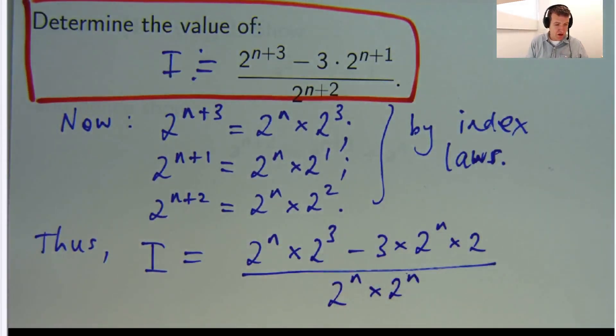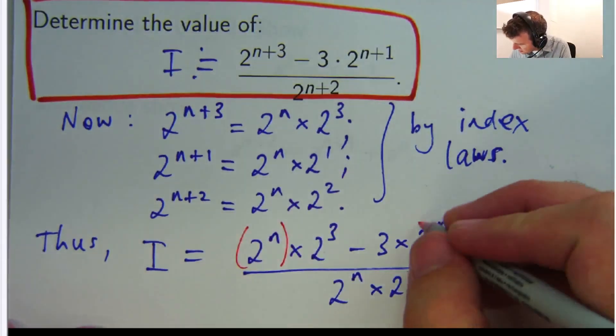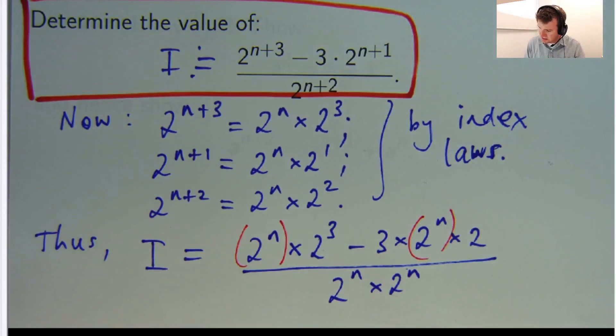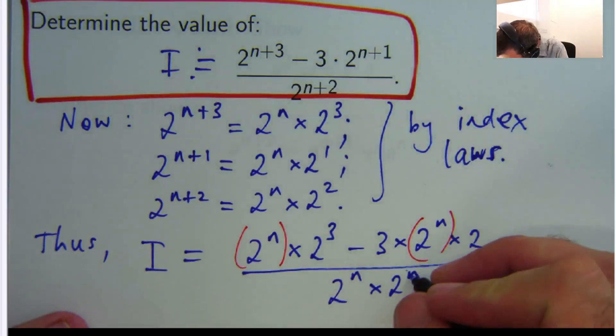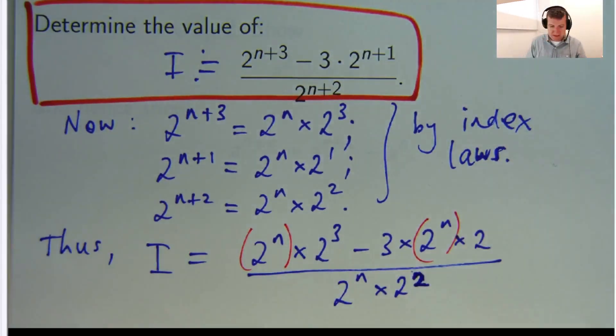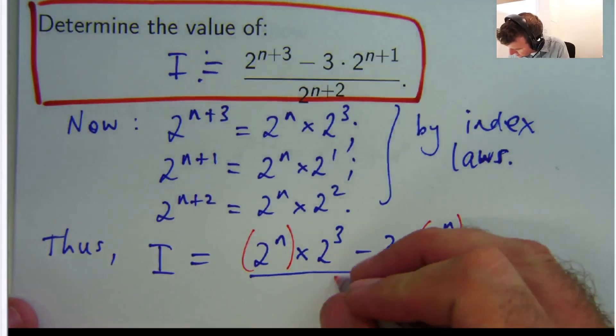Now, you can see, hopefully, that there's a 2 to the n there. In that term, there's a 2 to the n there, and there's... Oh, sorry. Let me fix that up. That should be 2 to the 2. 2 squared. And 2 to the n there.